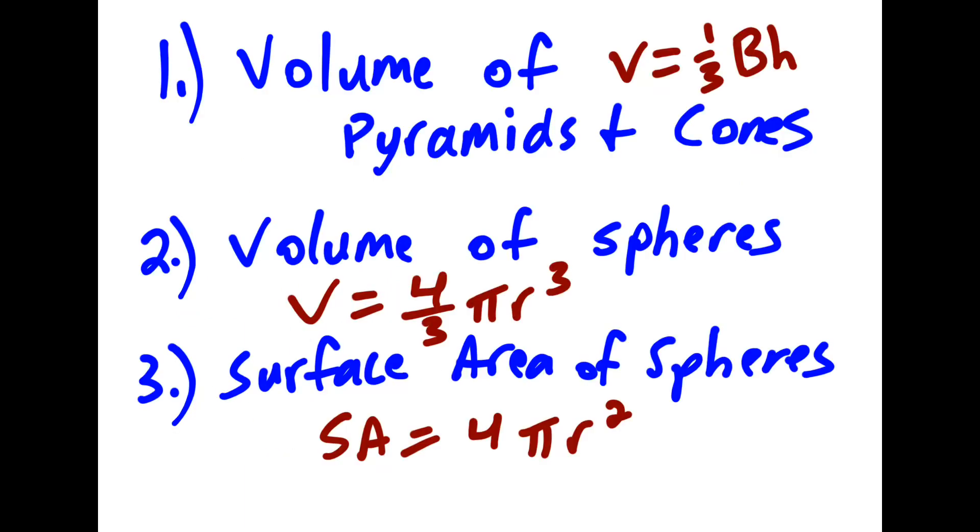So all of the problems come back to these three different formulas. And this capital B is the area of the base, which changes. There's different formulas depending on what the base is. But otherwise, we're just plugging in height, plugging in areas of bases, plugging in radius.